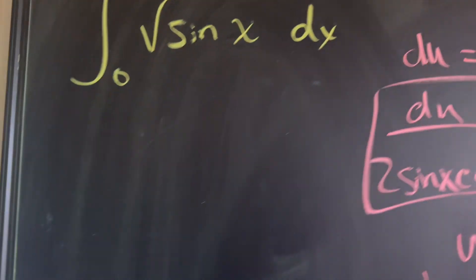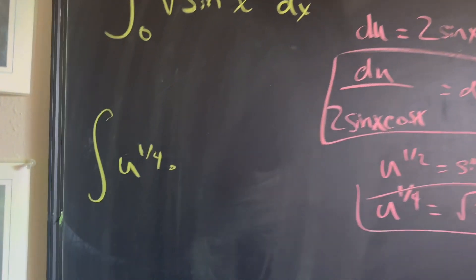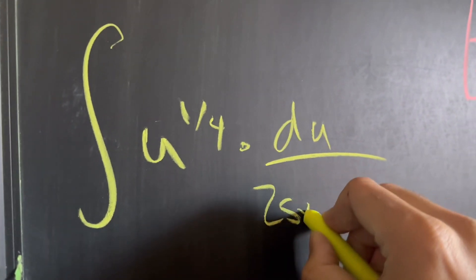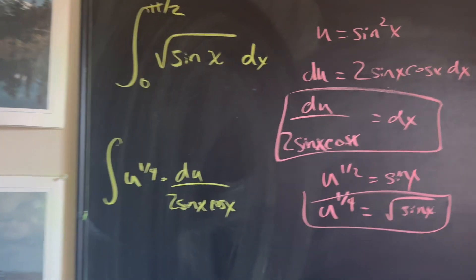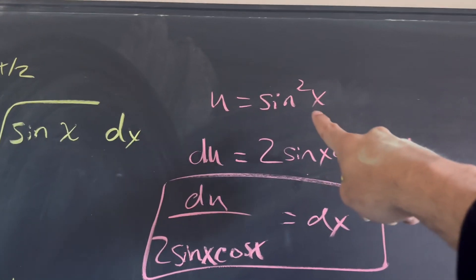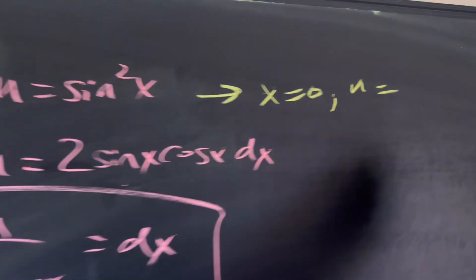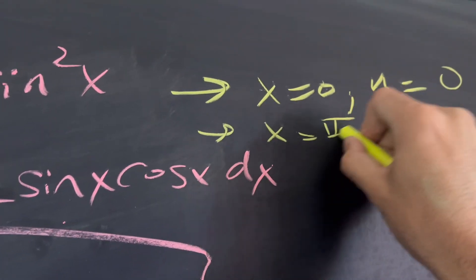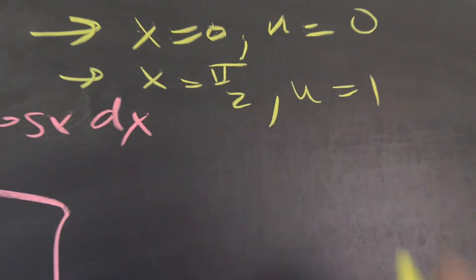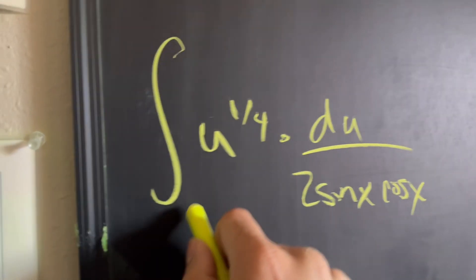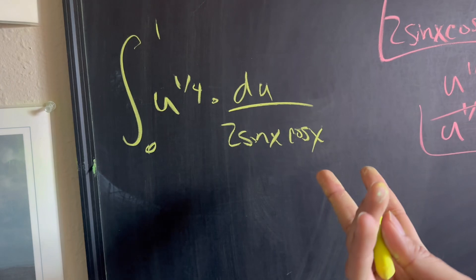So our integral becomes the integral of u to the one-fourth times du over two sine x cosine x. I haven't changed the parameters yet because they'll now be in terms of u. When x equals zero, u equals zero. When x equals pi over two, sine of pi over two is one squared, so u equals one. Our new bounds are zero to one.